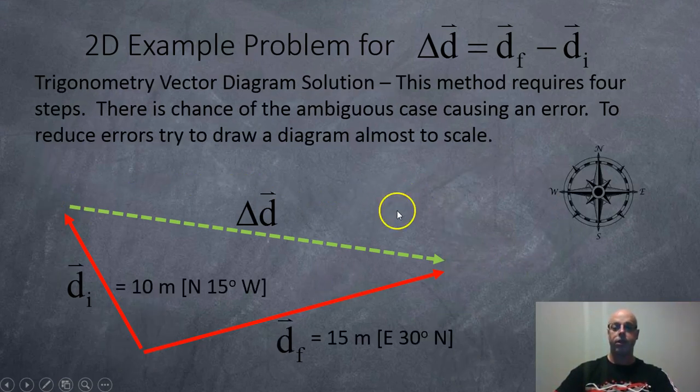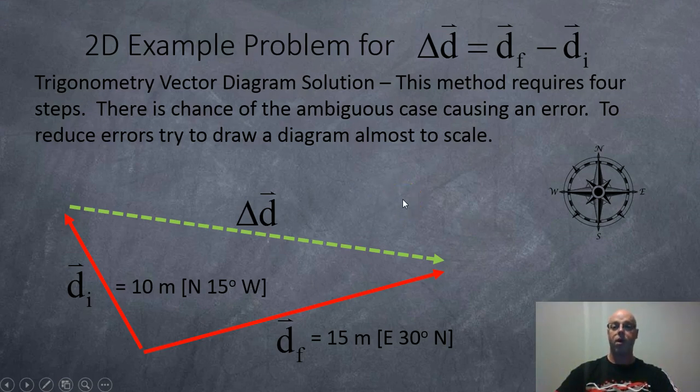Okay, so this method requires using the four steps: the box trick followed by the law of cosines, followed by the law of sines, and then getting an actual angle. The only problem with this method is sometimes the ambiguous case can give us the wrong answer, and so there is a better method called vector components which you may or may not learn in this course.